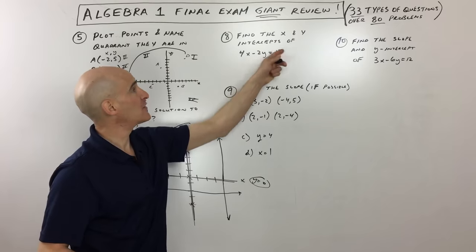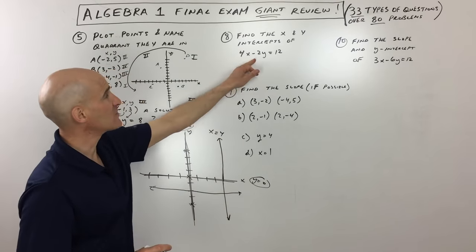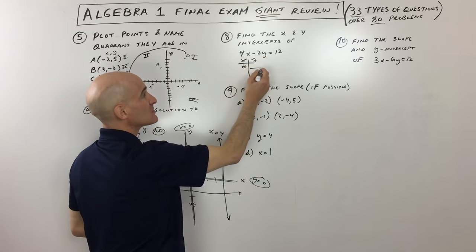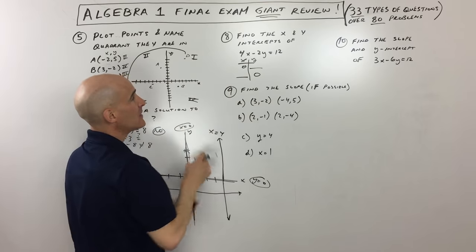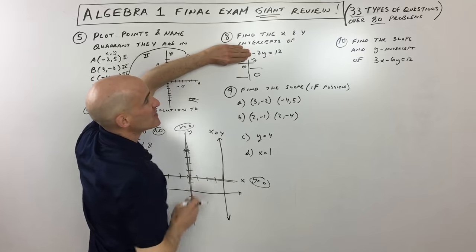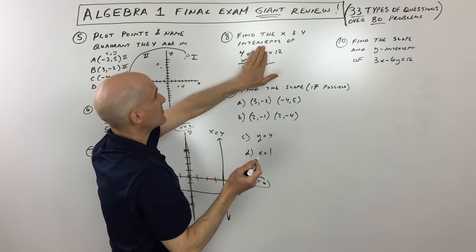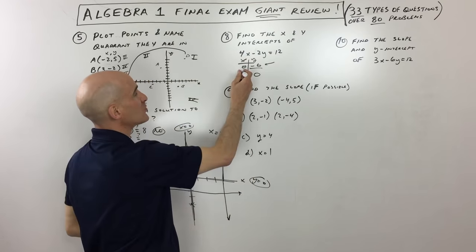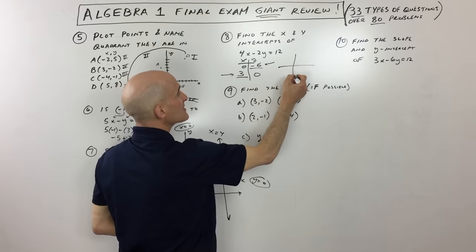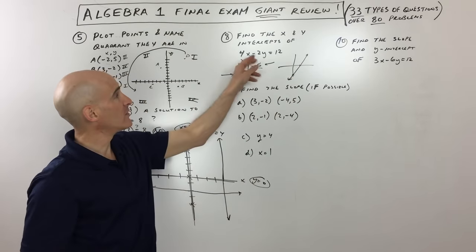Number 8 asks us to find the x and y intercepts of a line — where it crosses each axis. I'd make an x-y table and set x equal to 0 to find the y-intercept. Four times zero drops out, and solving gives y equals negative 6. Setting y equal to 0 drops that group, and dividing by 4 gives x equals 3. Those two intercepts let you quickly graph the line.